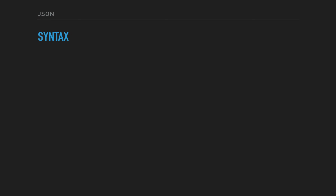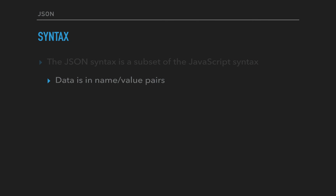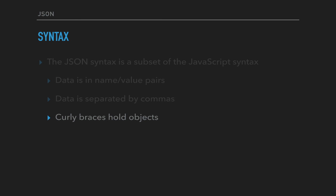Now that we've seen the data types, let's quickly review the syntax for JSON - it is very easy. The JSON syntax is basically a subset of JavaScript syntax. Data is always in name-value pairs, just like key-value, similar to a JavaScript object. Data is also separated by commas, just like in JavaScript objects. Curly braces hold the objects, just like in JavaScript, and square brackets hold the arrays, just like in JavaScript.